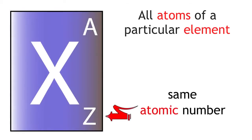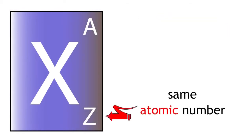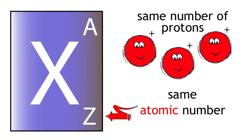All atoms of a particular element have the same atomic number. This means that they all have the same number of protons.